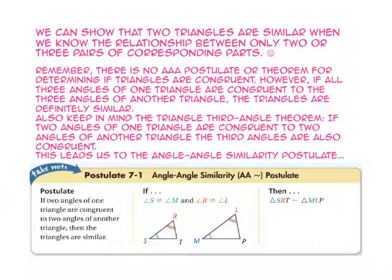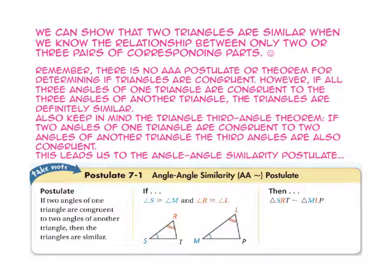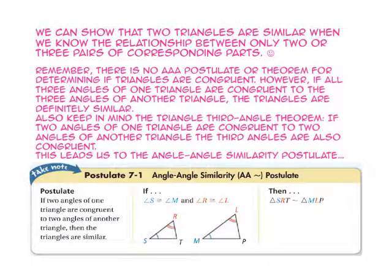We can show that two triangles are similar when we know the relationship between only two or three pairs of corresponding parts. Remember, there is no angle-angle-angle postulate or theorem for determining if triangles are congruent. However, if all three angles of one triangle are congruent to three angles of another triangle, the triangles are definitely similar.